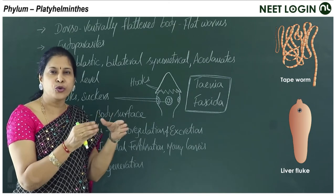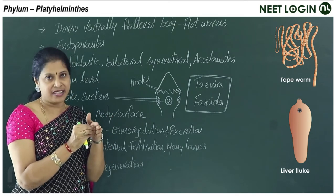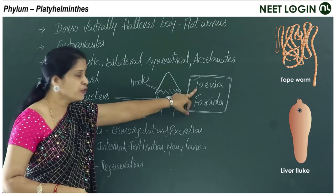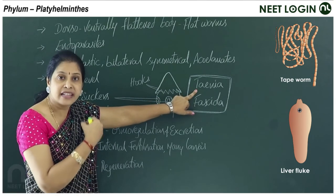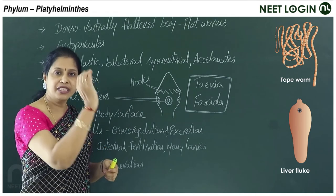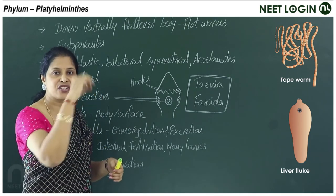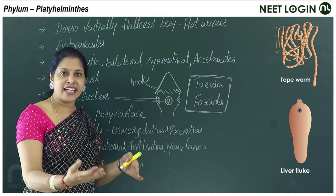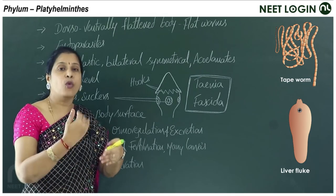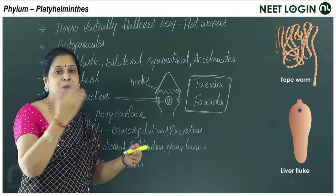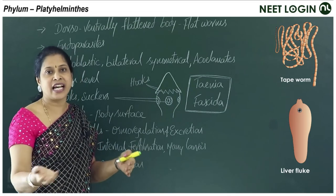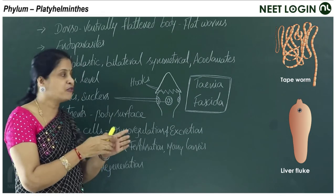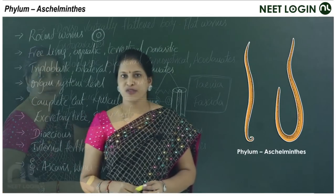The hooks and suckers in tapeworms act as holdfast organs for endoparasitic life. Whenever the gut undergoes peristaltic movements, the parasite could be expelled — hooks and suckers prevent this by attaching to the gut wall.